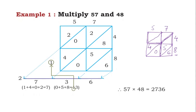For the next tens digit: 4 times 7 is 28 — put 8 and 2. Then 4 times 5 is 20 — put 0 and 2. Now adding along the diagonals: the unit digit is 6. For the tens digit, add 0 plus 5 plus 8, which is 13. Put 3 in the tens digit and carry 1 to the hundreds place.